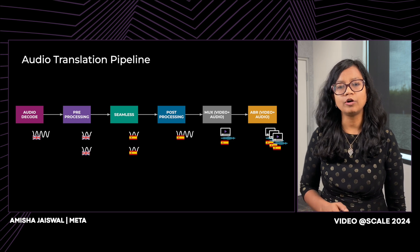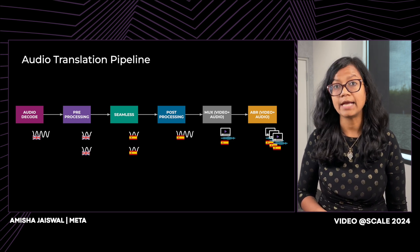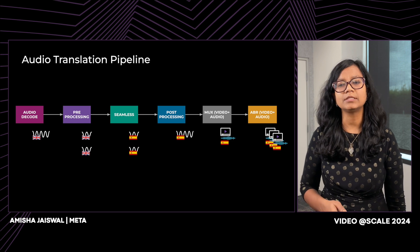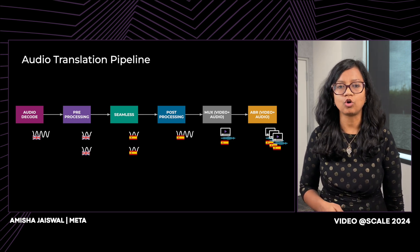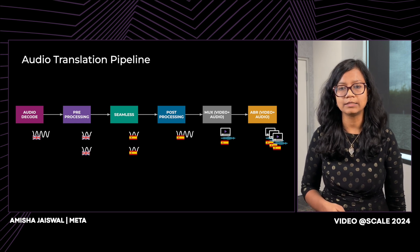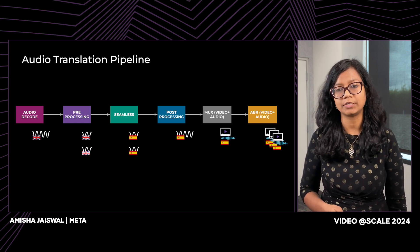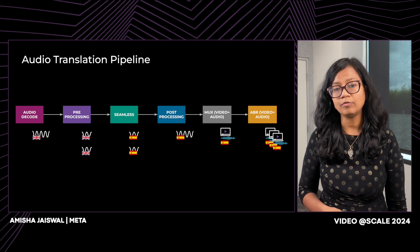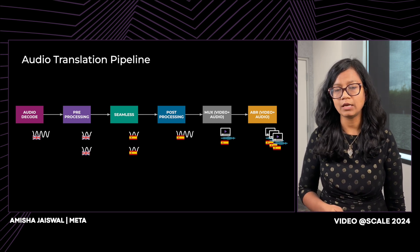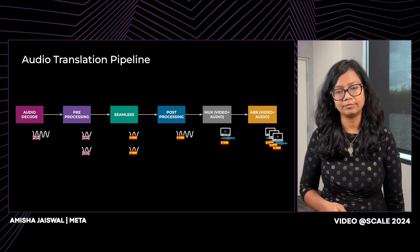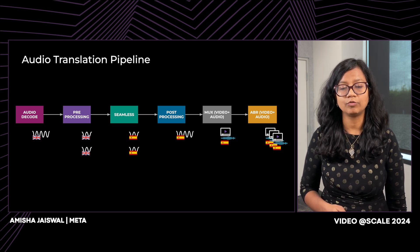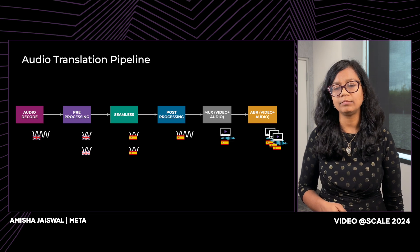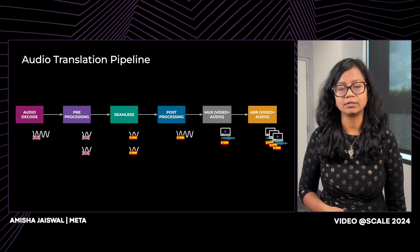Let's now look at the audio translation pipeline from a safety angle. As with any other model, Seamless can also hallucinate. It can also generate toxic translations, which can hurt user feelings and cause bad user experience. In Meta, for any system, we bake safety and integrity measures from the inception itself. So it was very important for us to ensure that the audio pipeline is safe for users.